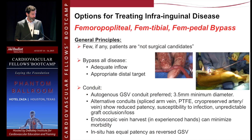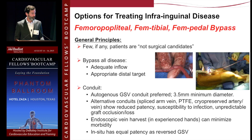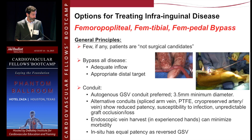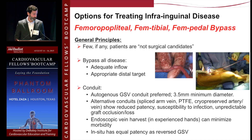In terms of fempop, femtib, and fempedal bypass, there are a few basic principles. Few if any patients are not surgical candidates — all patients have some bypass option, despite the fact that many options aren't ideal. The general principles involve bypassing all disease — going from healthy artery to healthy artery — with good inflow and an appropriate distal target. Ideal conduit is the greater saphenous vein, at least 3.5 mm diameter. Alternative conduits such as spliced arm vein, PTFE, and cryopreserved options are acceptable but show less patency, are more susceptible to infection, and can be unpredictable in terms of acute graft loss despite patent-appearing surveillance.